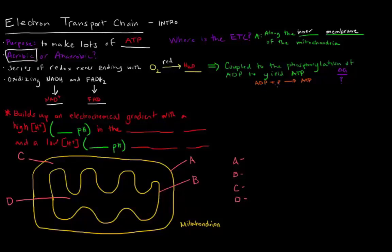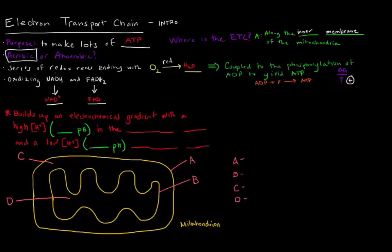If you recall, phosphorylating ADP to make ATP — is that delta G going to be positive or negative? This is going to be a positive delta G because we're making the energy, so energy is going to be required. So if taking ADP and phosphorylating it to ATP is an endergonic process and it's coupled to this series of redox reactions, we would expect this series of redox reactions to be exergonic — releasing energy that we can use to power the production of ATP.